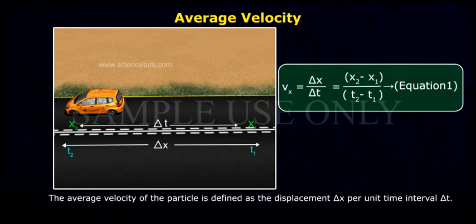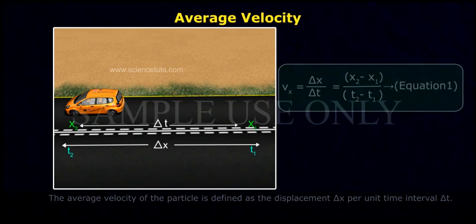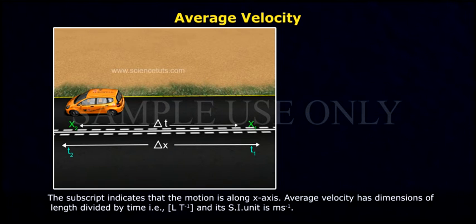vx equals delta x by delta t equals x2 minus x1 by t2 minus t1, Equation 1. The subscript indicates that the motion is along x-axis.